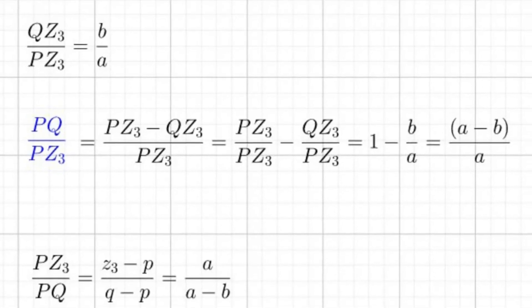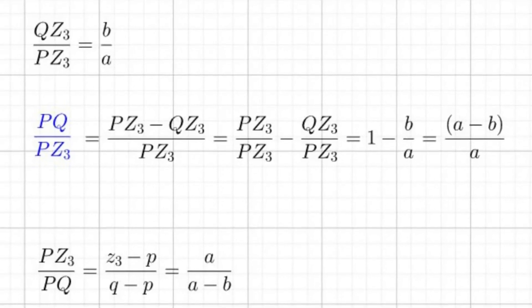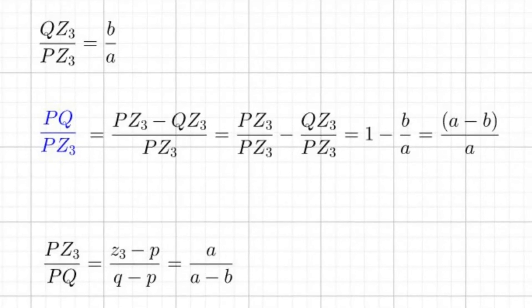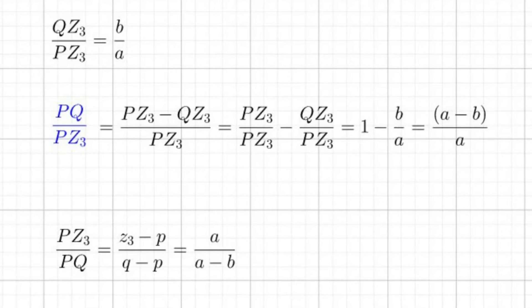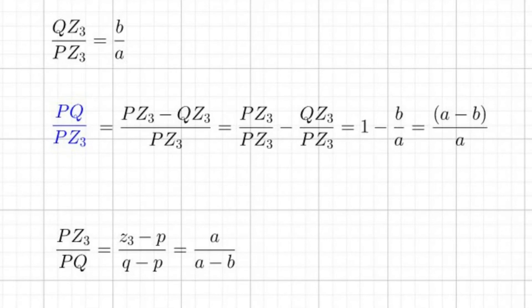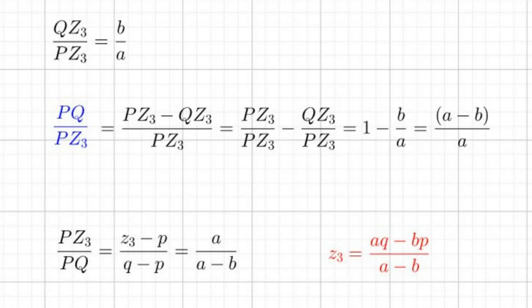We can now set this ratio equal to our expression with Z3, keeping in mind that it is now A over A minus B because we want the ratio PZ3 over PQ, not PQ over PZ3. Solving for Z3 gives us AQ minus BP over A minus B.